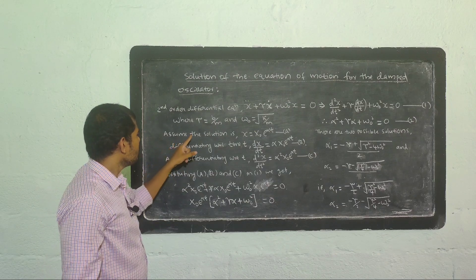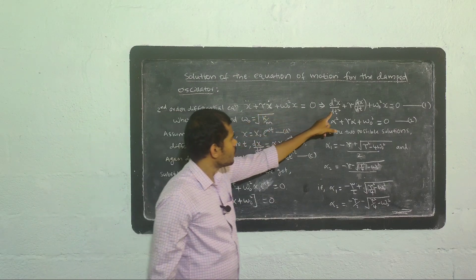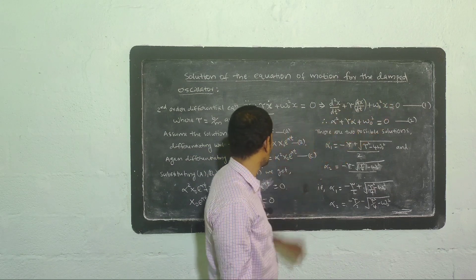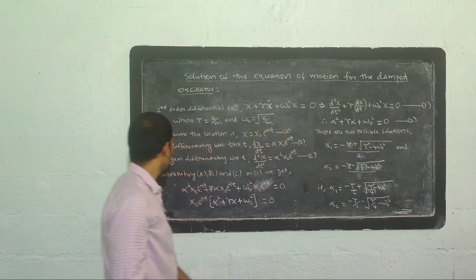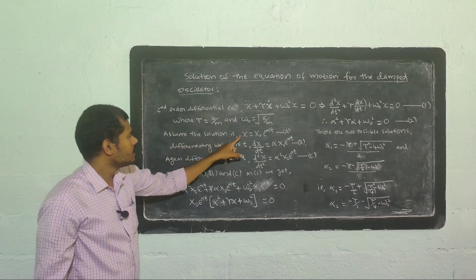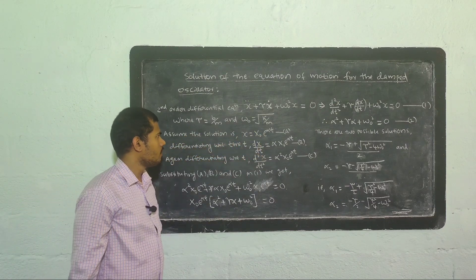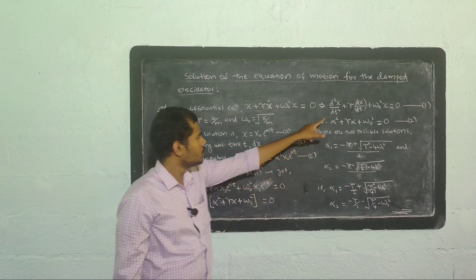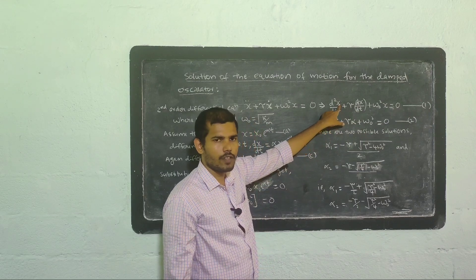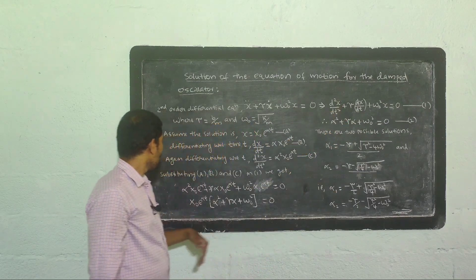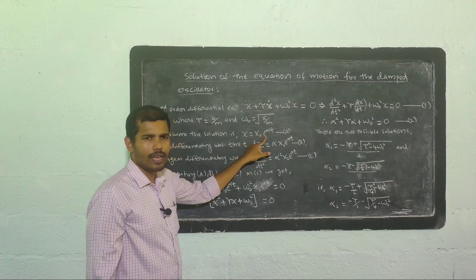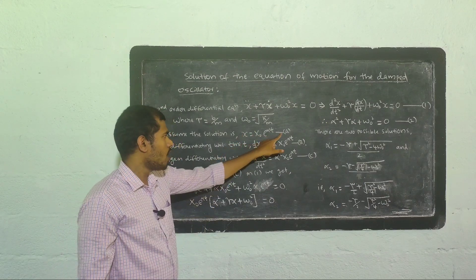We have to solve this second order differential equation. For that, we assume the solution is x equals x₀ e raised to alpha t. This assumed solution gives us the displacement x of the damped harmonic oscillator.